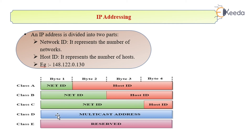Class D is completely used for multicast addressing and class E is reserved. That is all about IP addressing. Thank you.